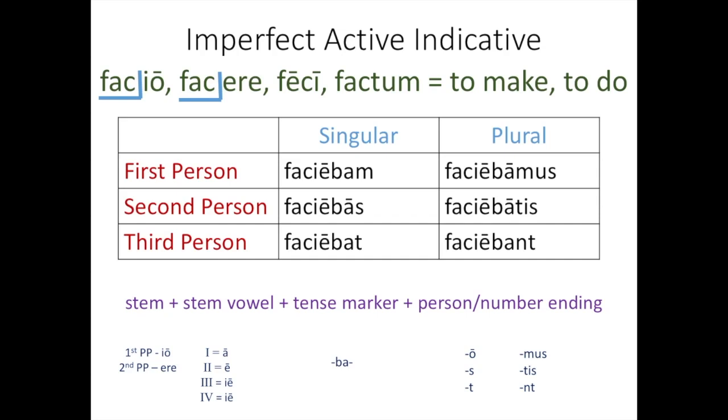So faciebam, I was doing. Faciebas, you were doing. Faciebat, he was doing. And then I'll let you practice the imperfect with audio, audire once you've made sure you copied this down.